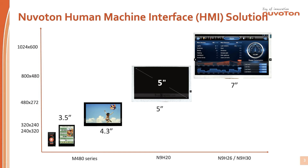We provide all kinds of panel sizes from 3.5 to 7 inches. If the panel size of your product is 3.5 inches, you can choose the Cortex-M480 series product line. You can choose the Nuvoton H20 part number when your panel size is from 4.3 to 5 inches. The Nuvoton H26 and H30 support larger panel sizes up to 7 inches, with a resolution of 1024 by 768.